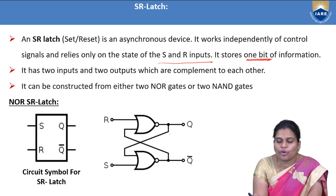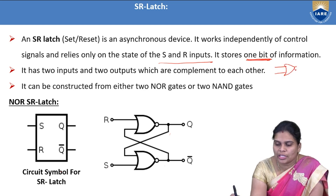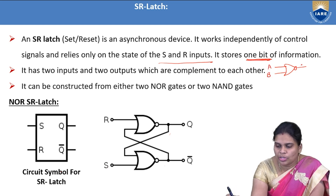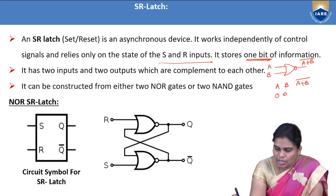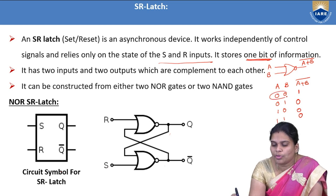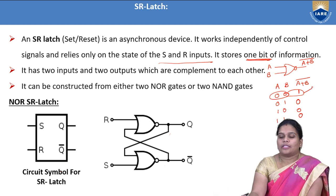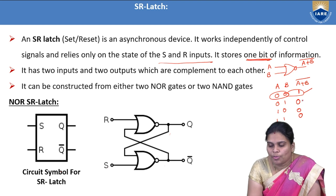For the NOR gate: inputs are A and B, and the output is (A+B)-bar. Truth table: when A=0, B=0 — output is (0+0)-bar = 0-bar = 1. When A=0, B=1 — output is 1-bar = 0. When A=1, B=0 — output is 1-bar = 0. When A=1, B=1 — output is 1-bar = 0. So when both inputs are 0, the output is 1. When any one input is 1, the output is automatically 0.